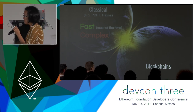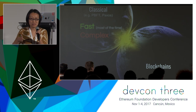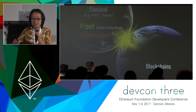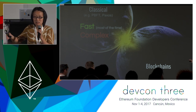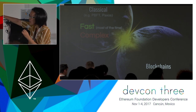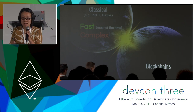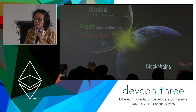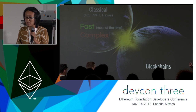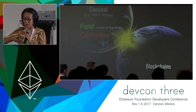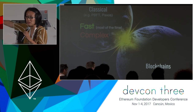Classical consensus protocols are fast — most of the time they can confirm transactions in a constant number of rounds. On the other hand, these protocols are notorious for being incredibly complex. There are implications for what complexity means on a large scale. From earlier research at Cornell, we now mathematically understand why these classical protocols aren't robust enough for large scale.